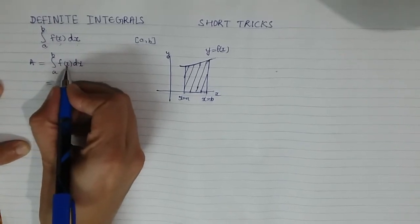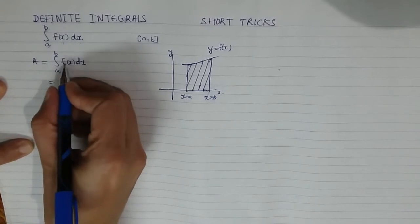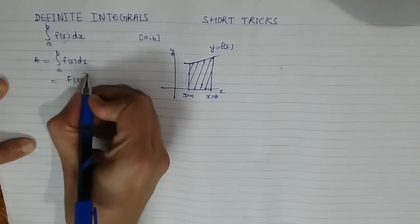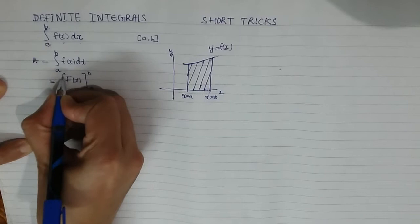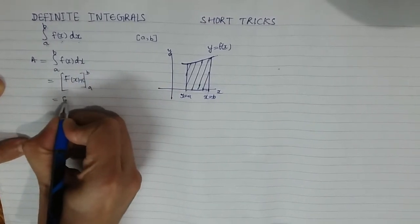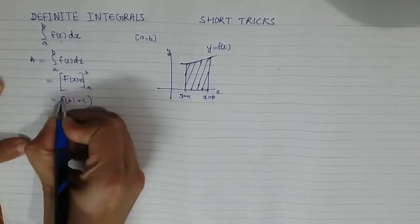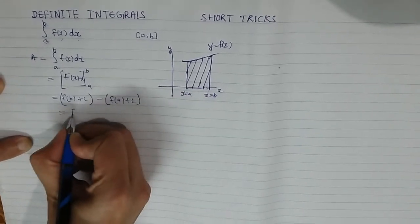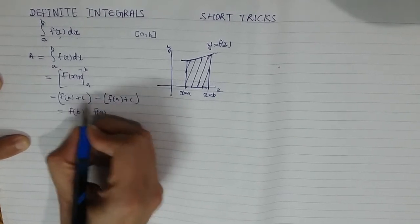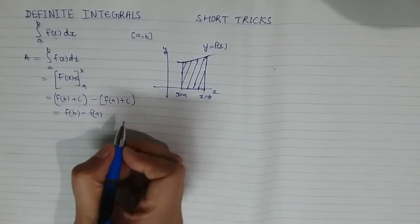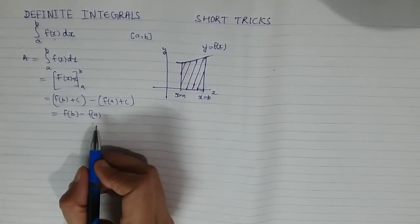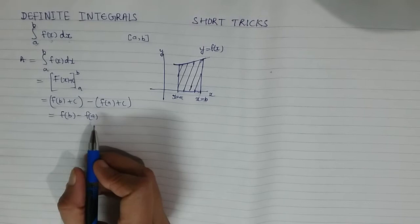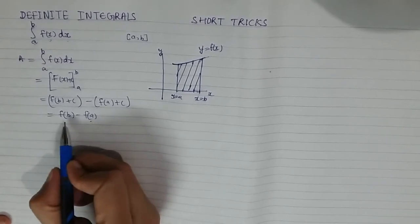The area under this curve between these two ordinates and the x-axis is called the definite integral. We solve it as we were doing indefinite integrals, and then put the limits. Suppose the integral of f(x) is capital F(x). Then between limits a and b this becomes F(b) + C minus F(a) + C, which simplifies to F(b) minus F(a). The two C's cancel, so the arbitrary constant disappears, giving us a definite — fixed — result.